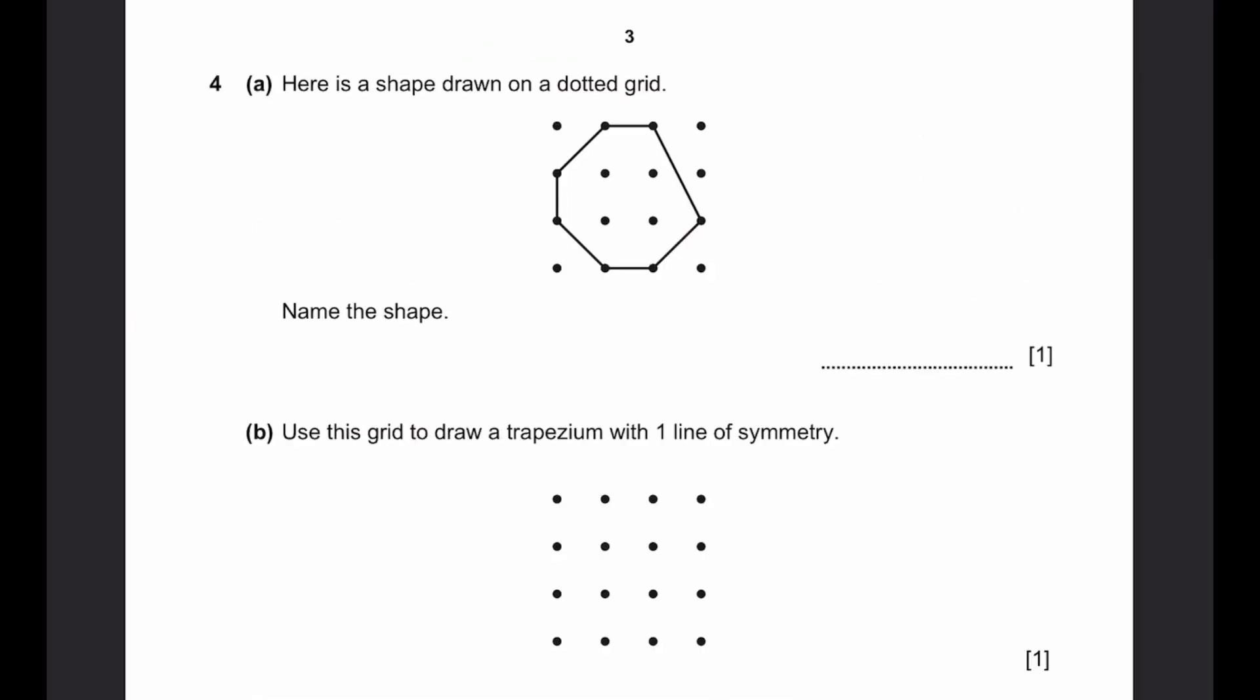Question 4. Here's a shape drawn on the dot grid. Name the shape. This does not look like a normal shape, but you can just count the number of sides. Even though it will be irregular, it is still counted to be a polygon. 1, 2, 3, 4, 5, 6, 7 sides, which means it is an irregular heptagon.